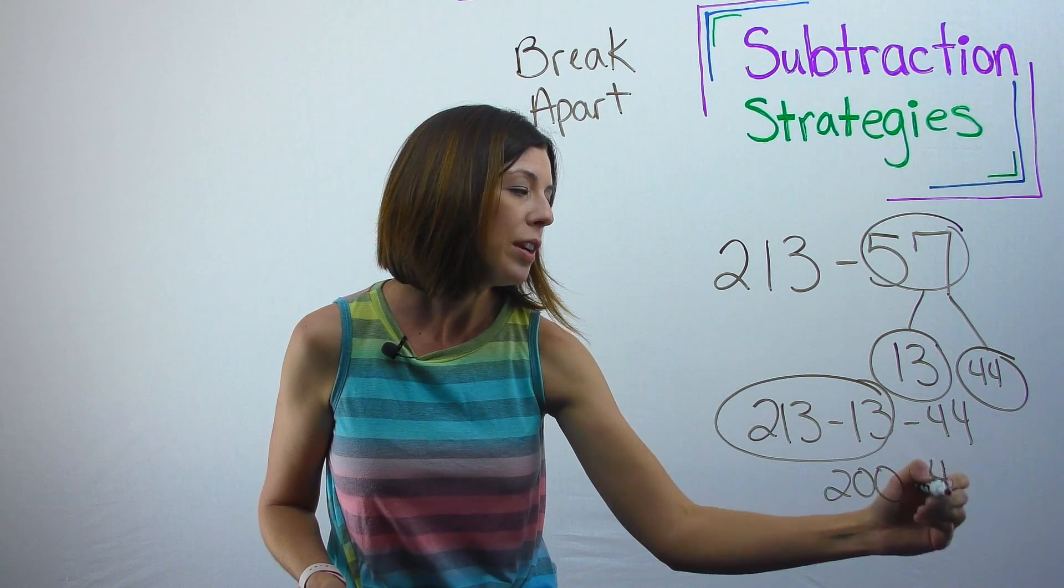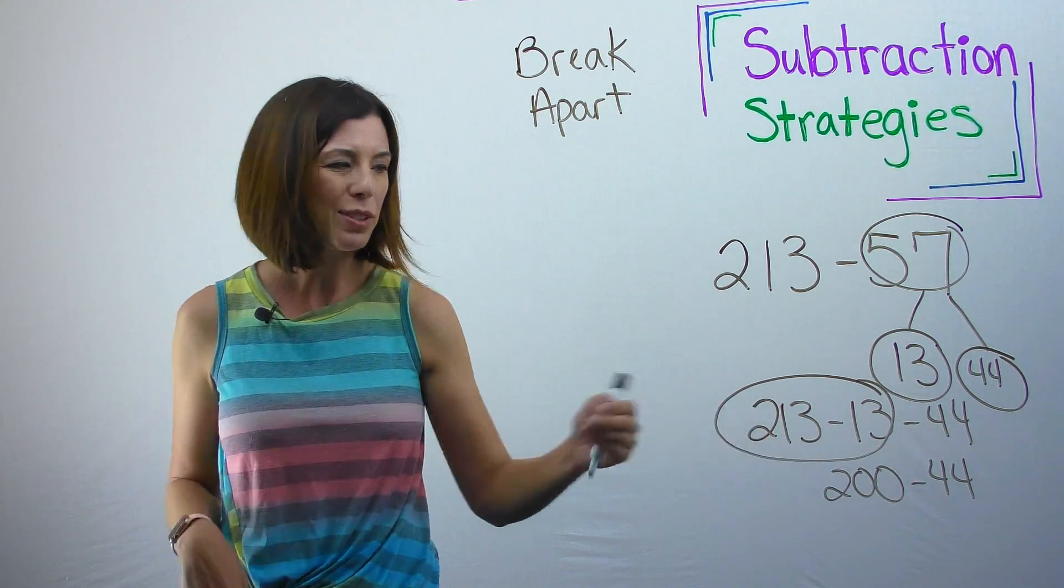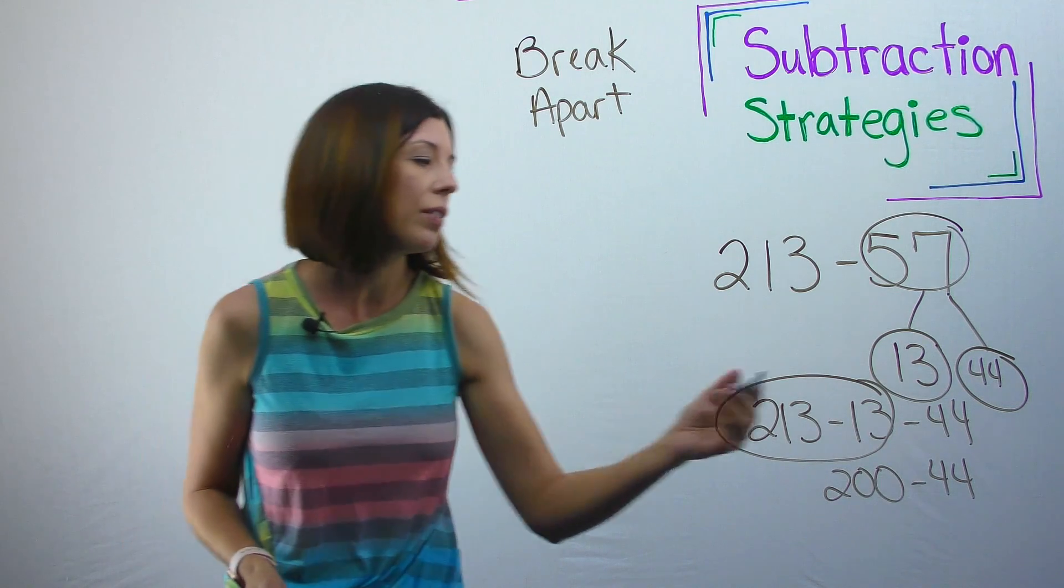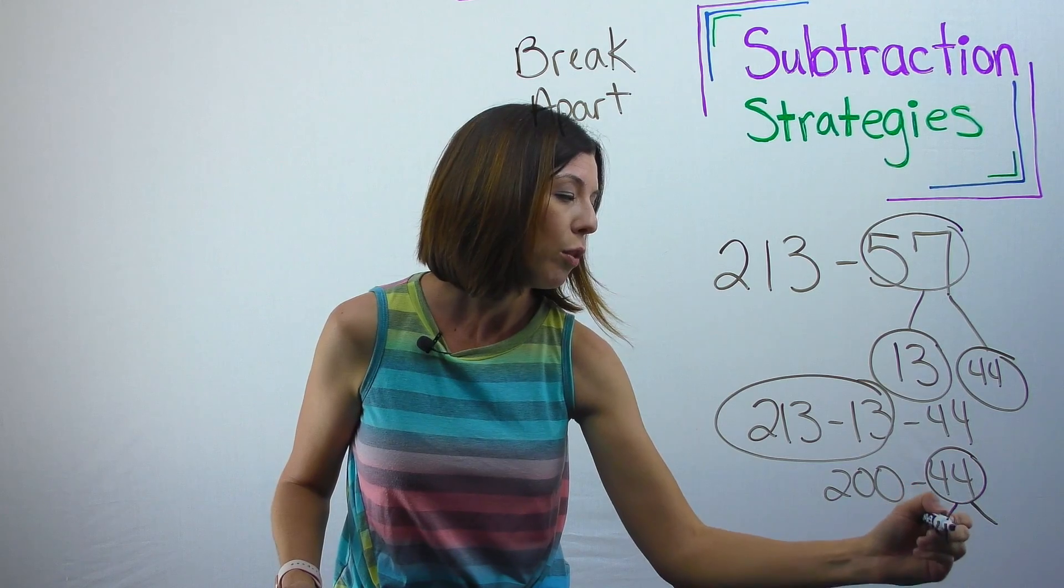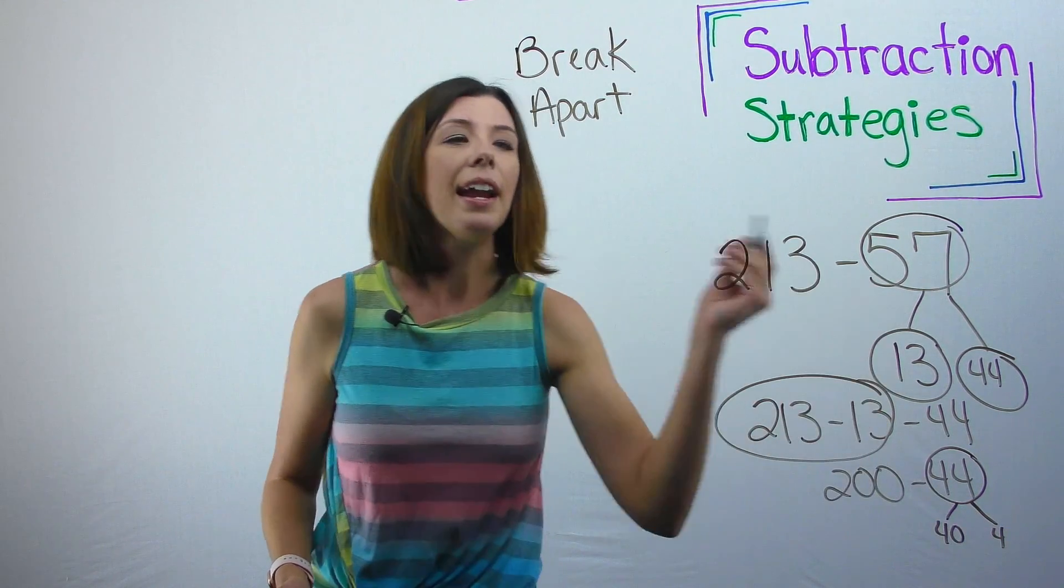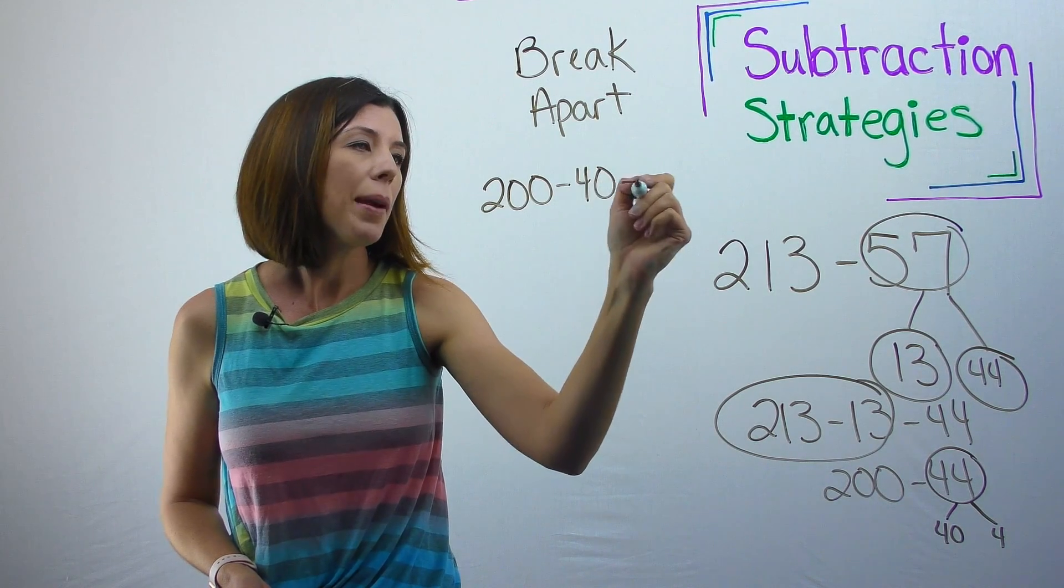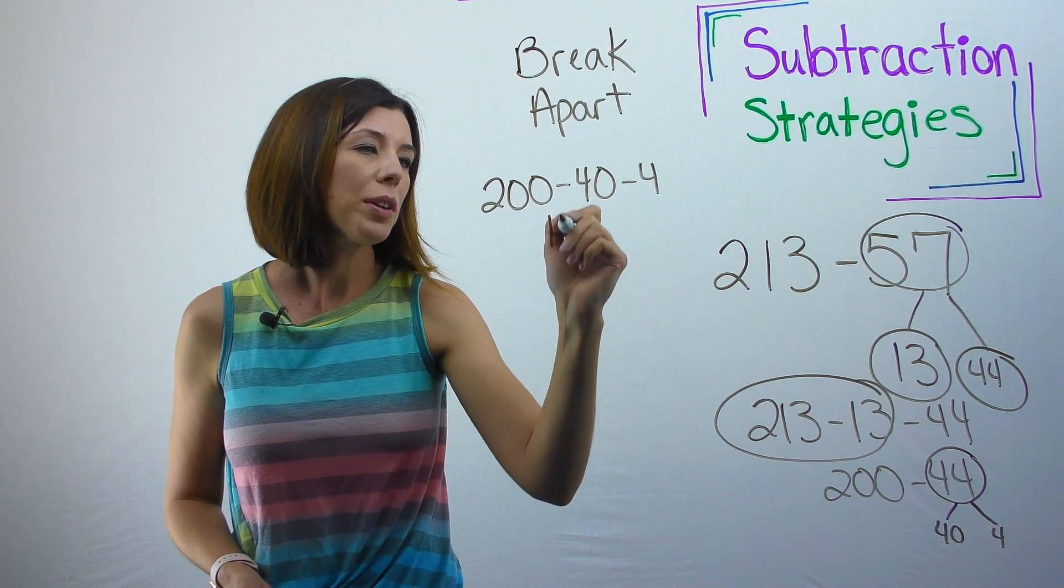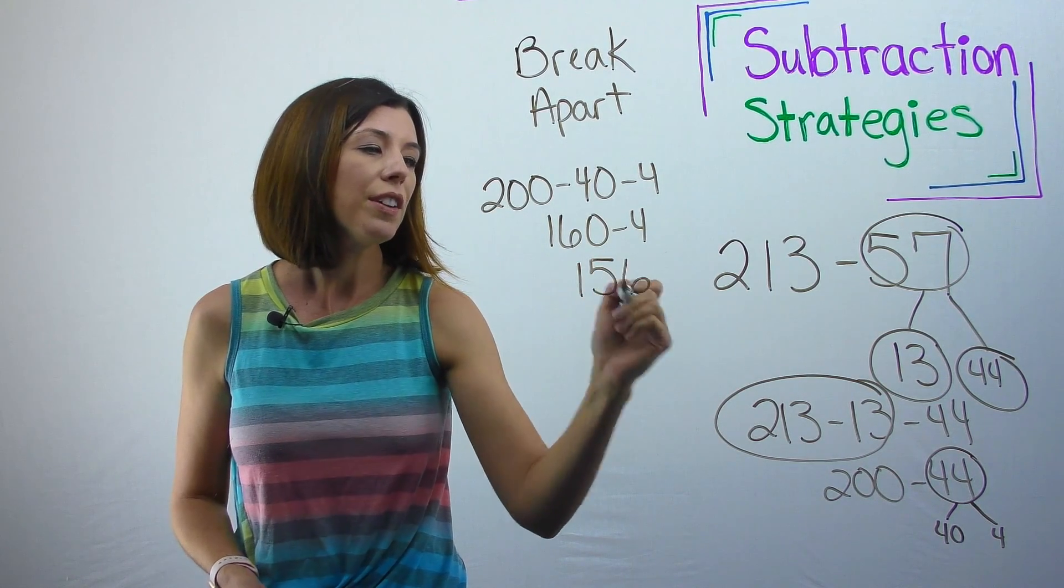So I now have 200 minus 44. And you might be thinking, yeah, but now you really created a mess for yourself. Again, I can break it down. So I could break this number apart by place value, 40 and 4. And I would have 200 minus 40 minus 4, 200 minus 40 is 160 minus 4, which would give me 156.